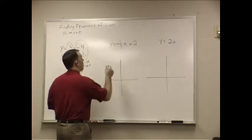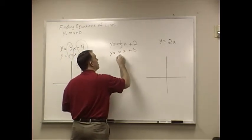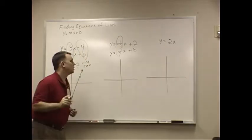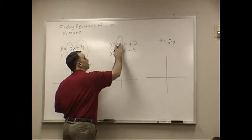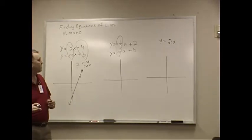y equals mx plus b. My m value, you know, that's not very clear, I'm sure, in the video. It should be y equals negative 1 third x plus 2.